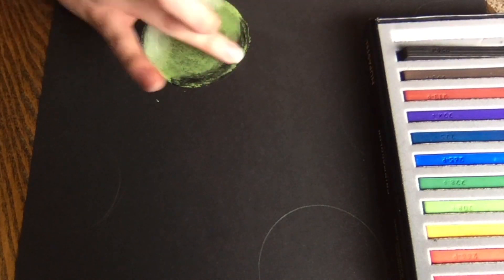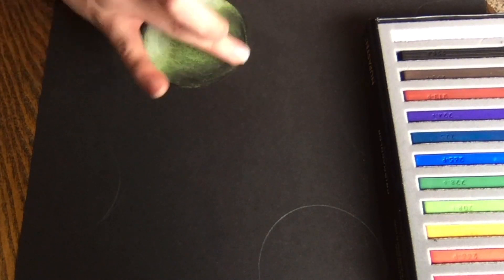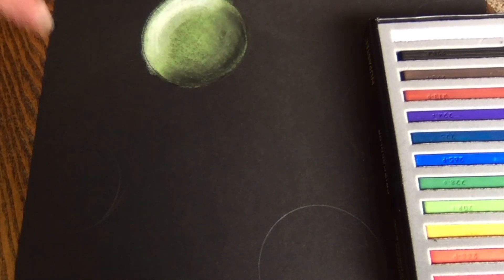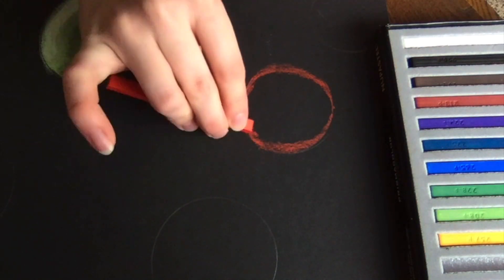And then if my highlight is on the top left, that means the opposite side, or the bottom right, is going to be in a shadow, that's going to get less light. So I'm going to use the tiny amount of black, because black is a very powerful color. And I'm going to add some black, and again, blend that with my finger. And now I've got a circle that looks more rounded, like a sphere, like a form.